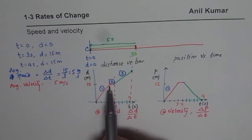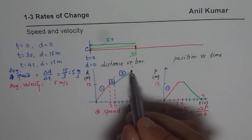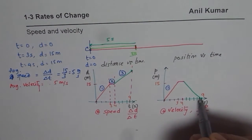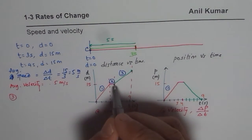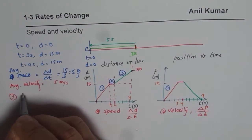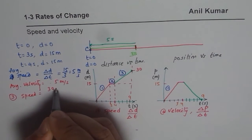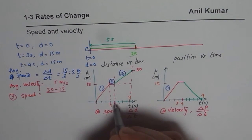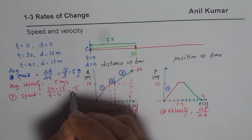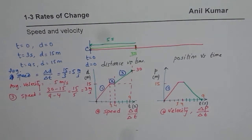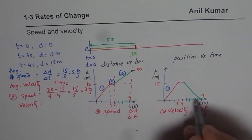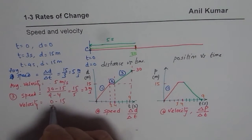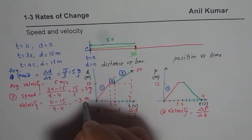In the third leg, the speed is 30 minus 15 divided by 9 minus 4, which is 15 over 5 = 3 meters per second. But the velocity is 0 minus 15 over the same change in time, which is minus 3 meters per second. Speed is always positive, but velocity could be positive or negative.